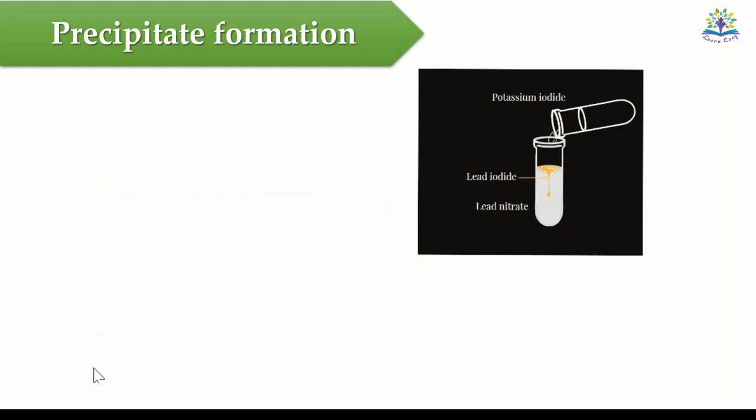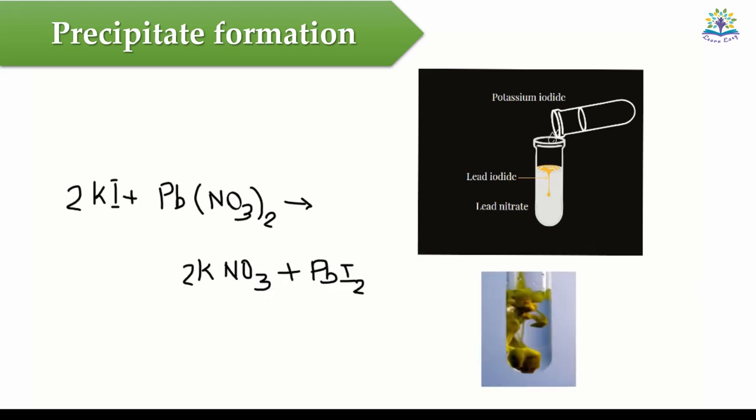We can also know that a reaction has taken place by the formation of a precipitate. When potassium iodide solution is added to lead nitrate solution, a yellow solid precipitate of lead iodide is formed immediately.